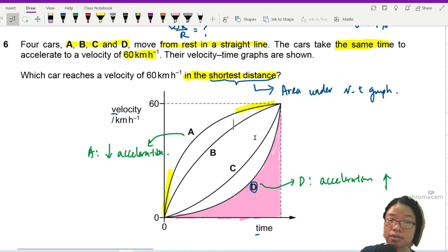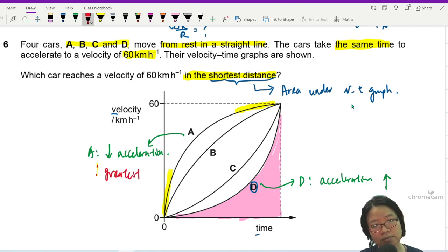If they want distance, then D will have the shortest distance, because it has the smallest area under the graph. And A will have the greatest distance, because it has the largest area under the graph. It is this entire area, the whole thing.